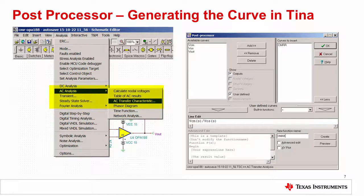In this case, we use the post processor to perform math on the AC transfer characteristic to generate the AC CMRR curve. To use this tool, first select the appropriate curve from the available curves list. Next, use the line editor to apply the math function.